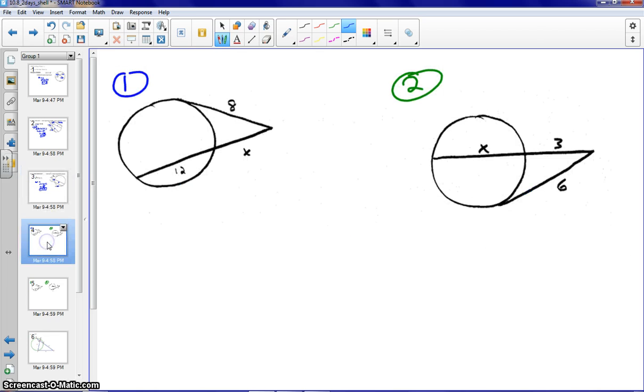Let's move to our first example. This is an example of a tangent-secant. So we're dealing with tangent squared equals outer times whole. So tangent squared equals outer times whole. Our tangent is 8, so we would square that. The outer part of the secant is X times the whole thing. So again, we'd have to do the inner part plus the outer part, the chord plus the external part of the secant, 12 plus X.